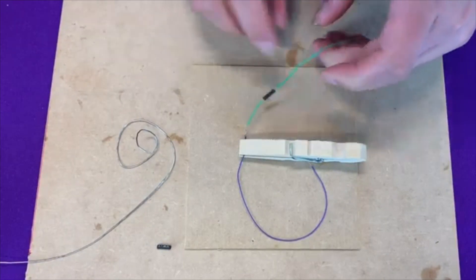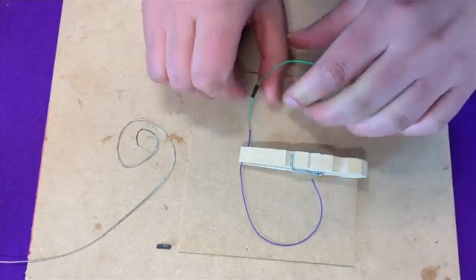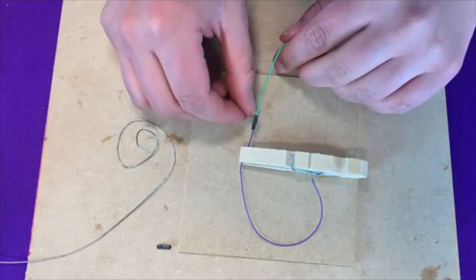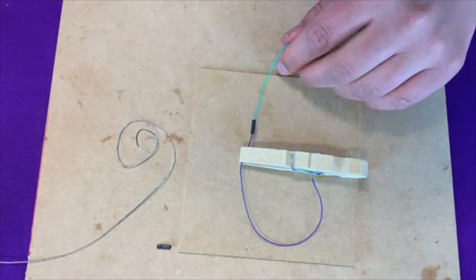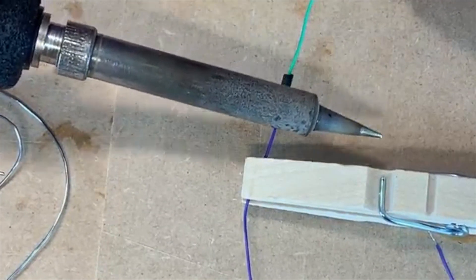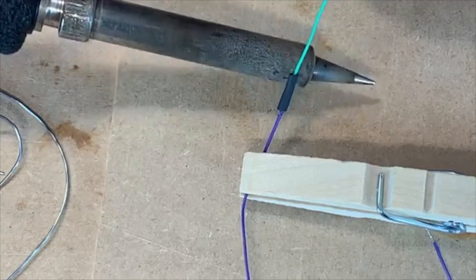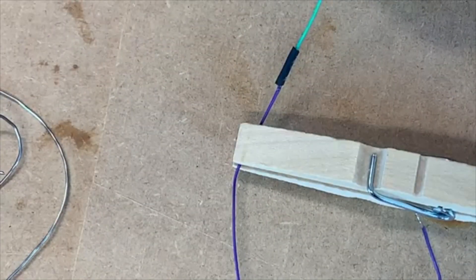And then slide this out of the clamp a little bit so that the heat shrink can go over the joint. And we're going to use the barrel of the soldering iron to shrink the heat shrink. And now our joint is insulated.